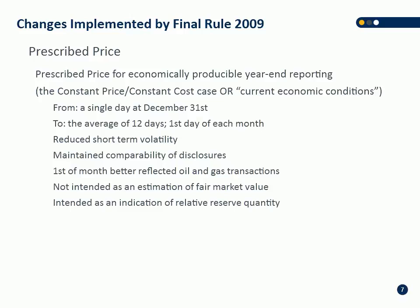Instead of using a single-day constant pricing based on a separate trading price, they moved to the average of 12 days — the first trading day of each month. So they now use January 1, February 1, all the way through to December 1 as long as you're disclosing a December 31 report. This reduces short-term volatility so it's no longer based on what happened on New Year's Eve, while maintaining comparability of disclosures. The first of the month was deemed to better reflect oil and gas transactions given the way markets work in America.